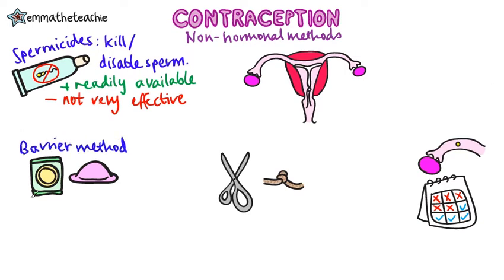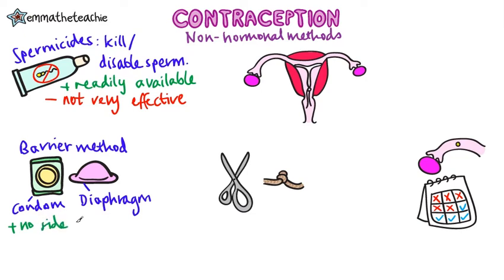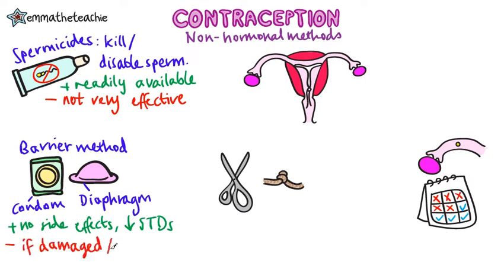Next up are barrier methods, such as condoms for males and diaphragms for females. The good thing about these is that there are no side effects, and they can prevent against some STDs. The disadvantage is they need to be fitted correctly, and if they get damaged they can easily let sperm through, increasing your risk of pregnancy.